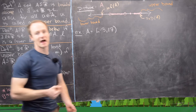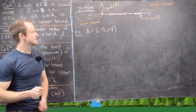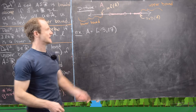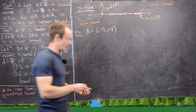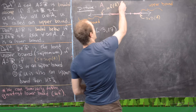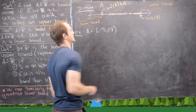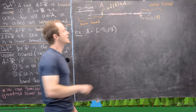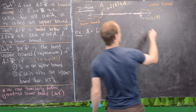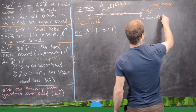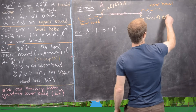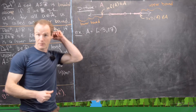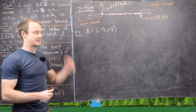Notice two things going on here: the infimum of A is actually an element from A because we've got a filled-in dot there, but the supremum of A is not an element from A since it's an open circle. Both of those are possibilities.